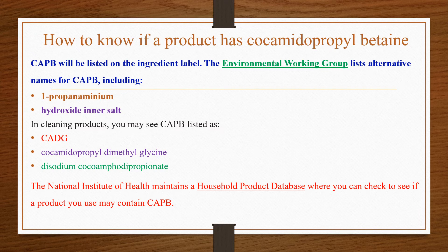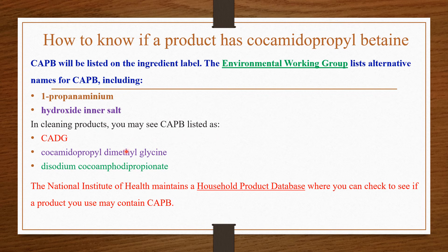To know if a product contains CAPB, look for it by name on the ingredient label. The Environmental Working Group lists alternative names for CAPB, including "1-propanaminium" and "hydroxide inner salts." In cleaning products, CAPB may be listed as CADG, meaning cocoamidopropyl dimethylglycine, which is used for floor cleaning or disinfecting wipes, and also as disodium coco-40 propanoate.